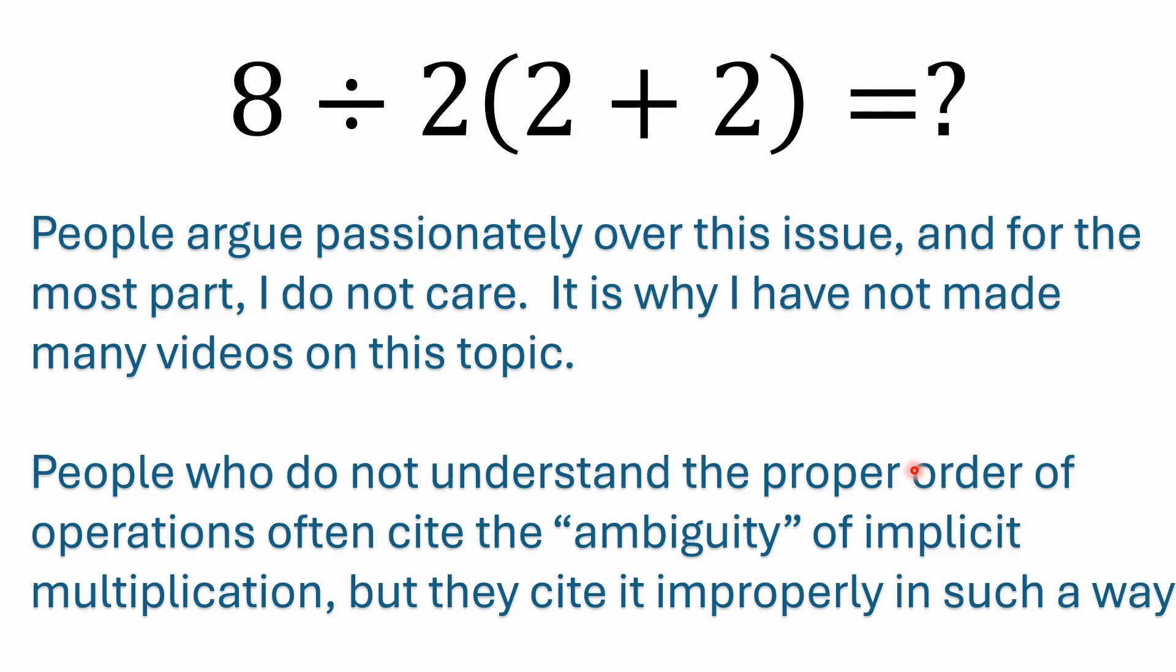Now, I'll say people argue a lot over this issue, and for the most part, I don't really care about the argument. But I guess I care enough to make a video that I hope a lot of people like, share, and subscribe. And let's be honest, these things don't show up on the internet for a reason, right? Because people want to get a lot of attention. And if you've got a YouTube channel, part of that is trying to get some attention in the process of getting information out there. So yeah, a lot of people are going to argue, there's going to be a lot of comments back and forth. And people that don't really understand the modern interpretation of the Order of Operations, they'll often cite the ambiguity of implicit multiplication. But they'll cite it in a wrong way.